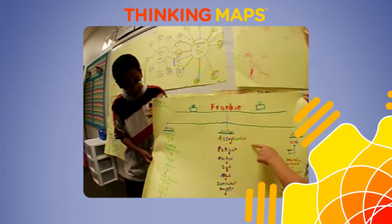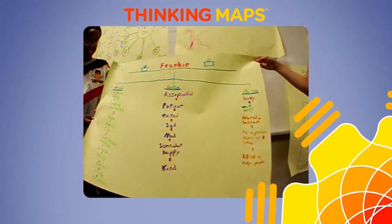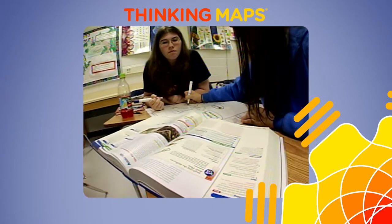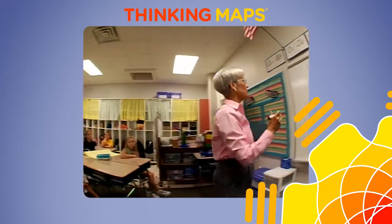When students use thinking maps over and over again — the same map for the same thought process — what happens is the brain wires those two together, so that every time a student sees a tree map, they think classification. So when they're in a textbook and it says there are three kinds of laws, in their mind they see a tree map, giving them a visual pattern.